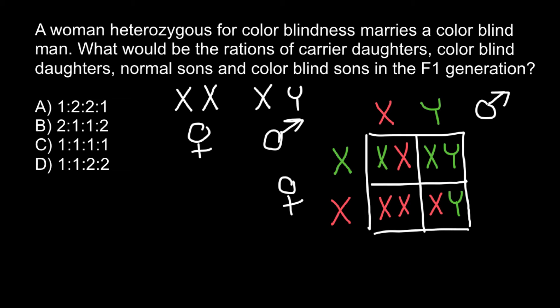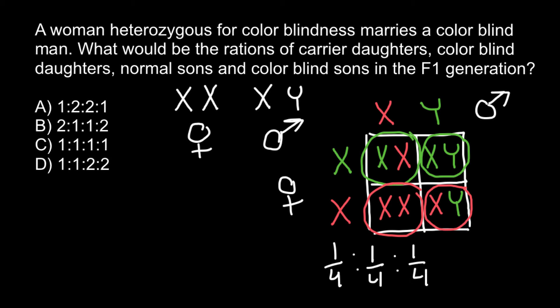According to the Punnett square, 50% of the females would be carriers but phenotypically normal, and 50% of the females would show the affected phenotype — they would be colorblind. 50% of the males would have normal vision and 50% of the males would be affected with this genetic disorder. This gives us a ratio of one quarter to one quarter to one quarter to one quarter — or 25% each.